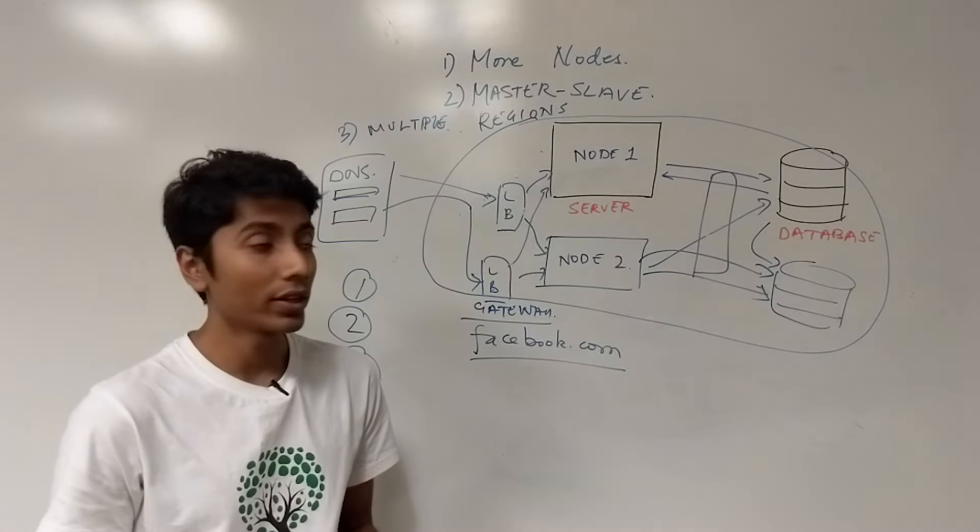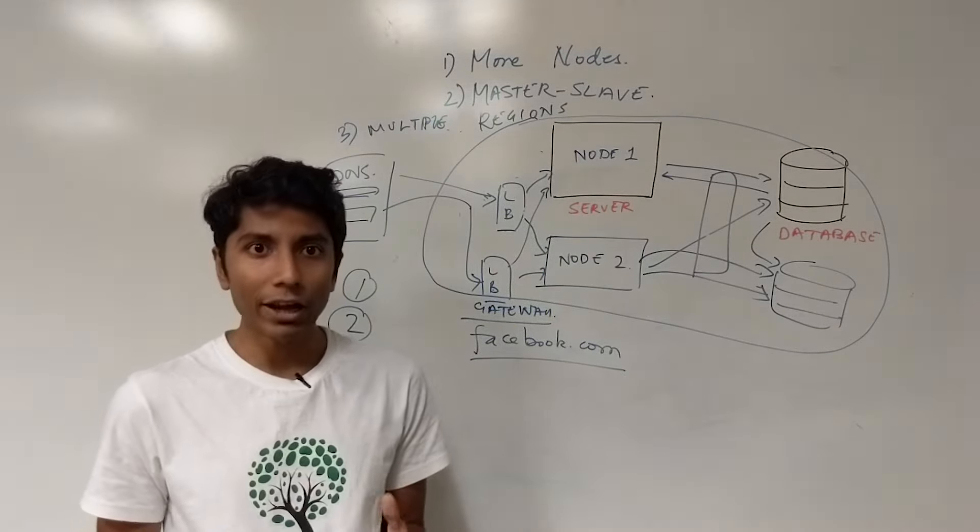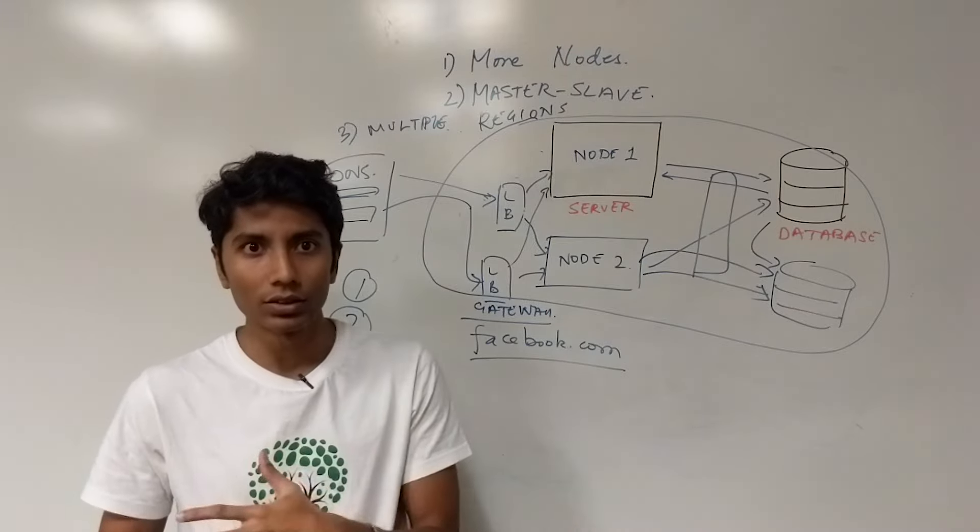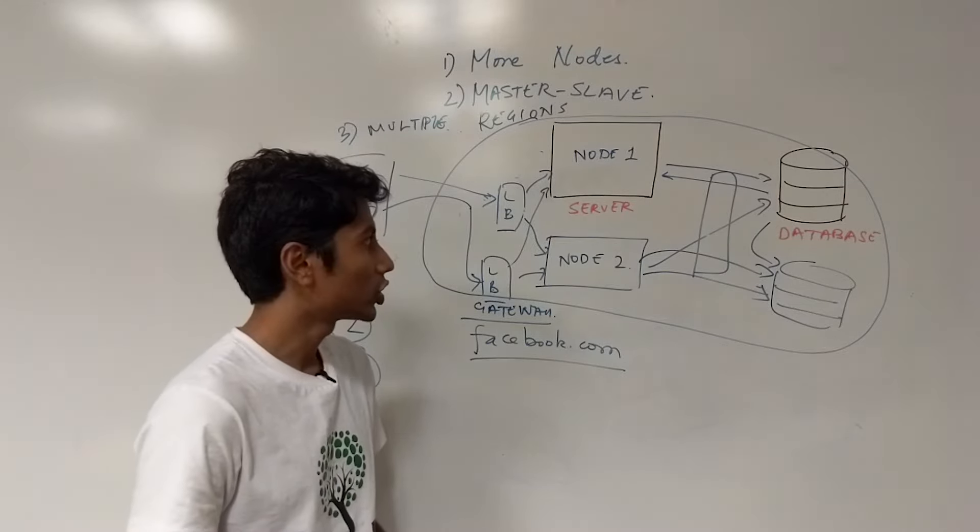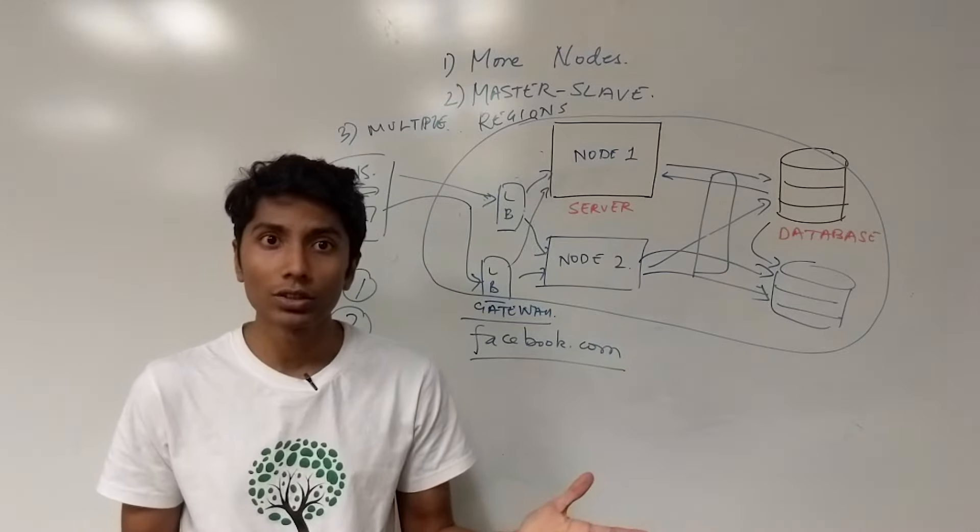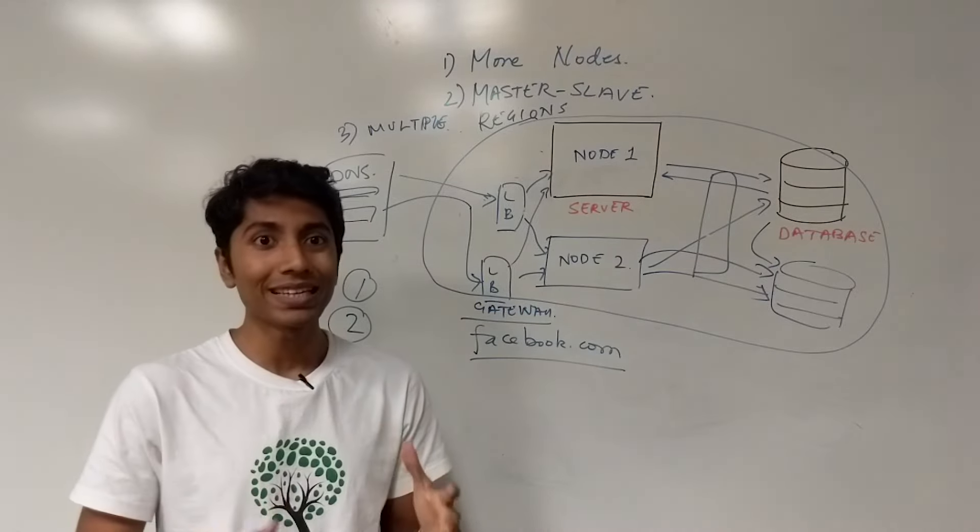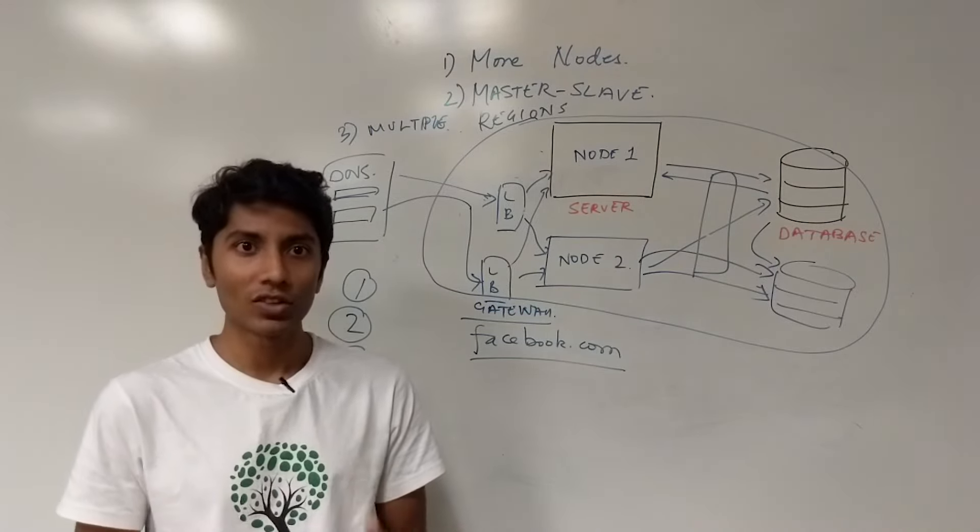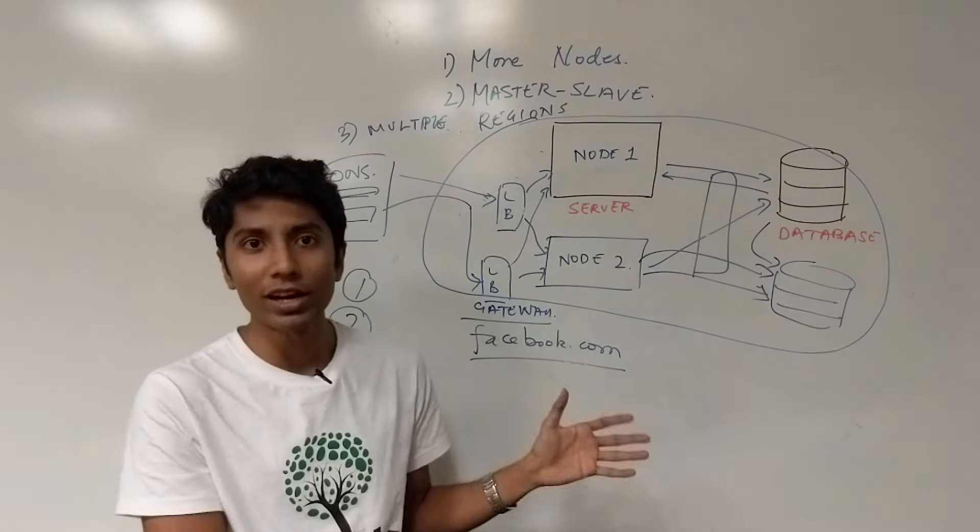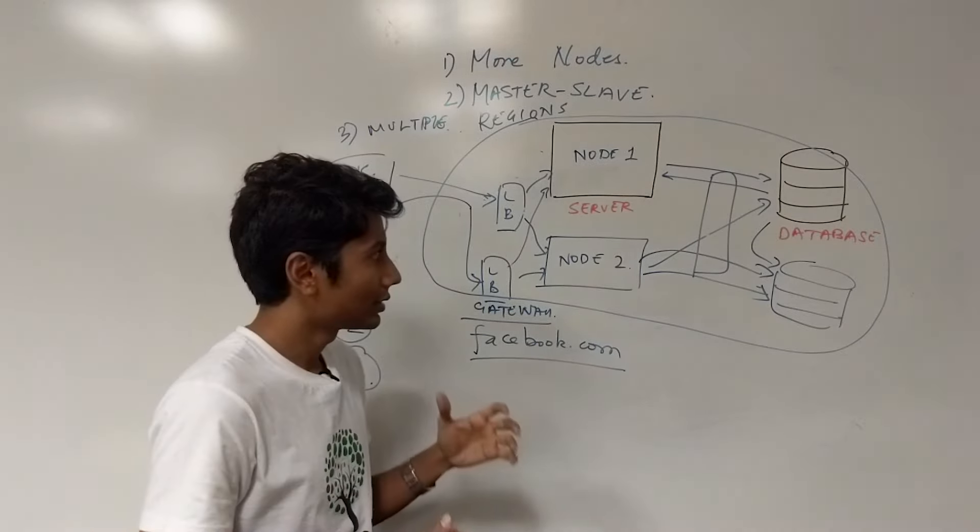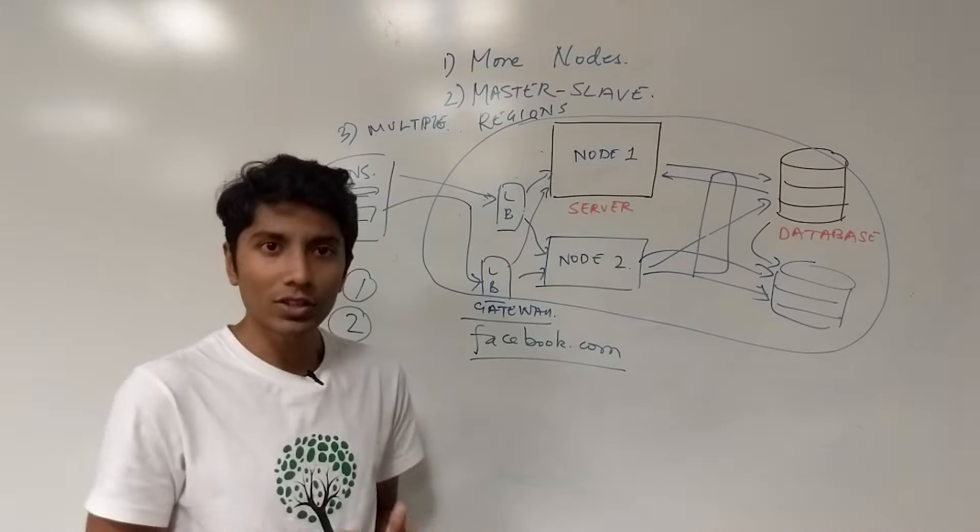Netflix does this really well. What they do is they have something called chaos monkey and they also have other stuff apart from chaos monkey, which just randomly goes on production and takes down one node. Just to make sure that your system is really resilient, really as distributed as you call it. So that's something that we can all learn from.